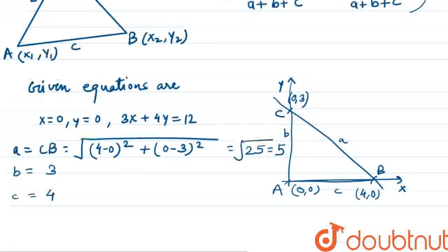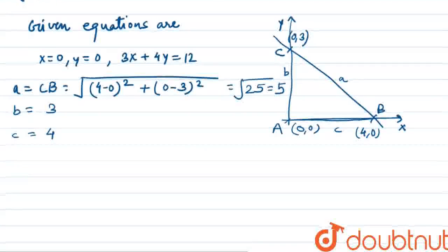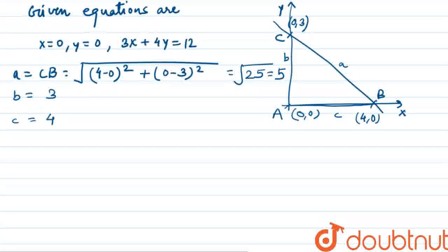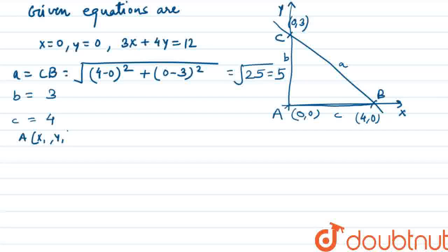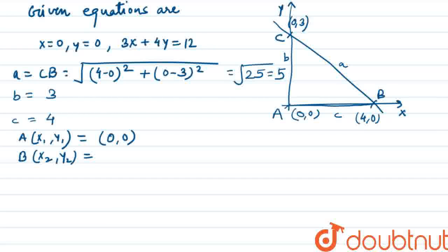For the value of c, we can see that along the x-axis it is 4 units, so c = 4. Now, x1, y1 for vertex A is (0, 0); x2, y2 for vertex B is (4, 0); and x3, y3 for vertex C is (0, 3).